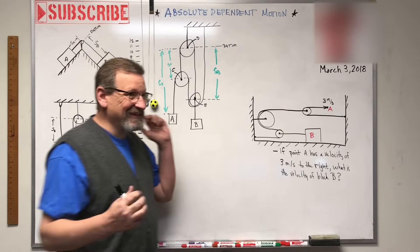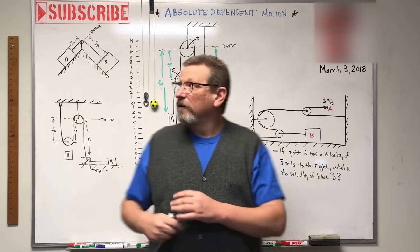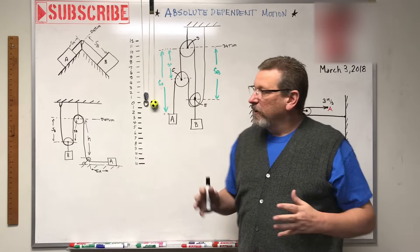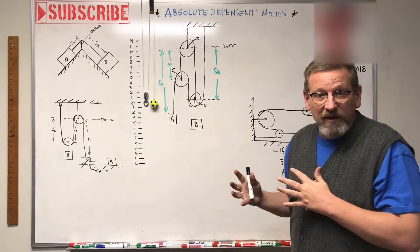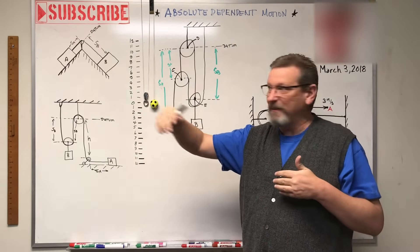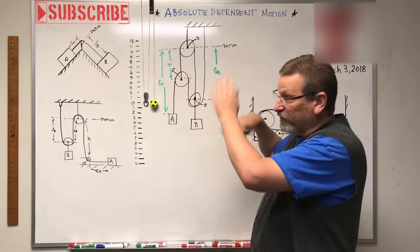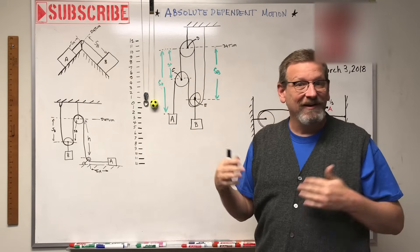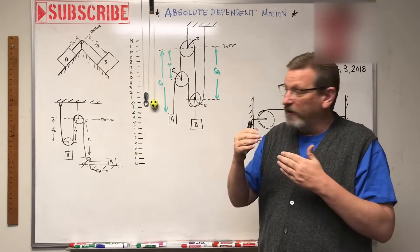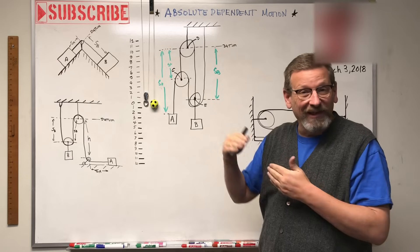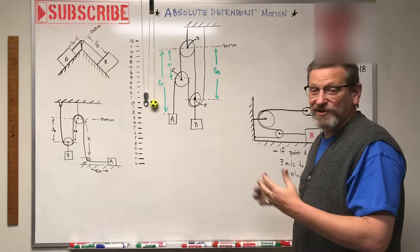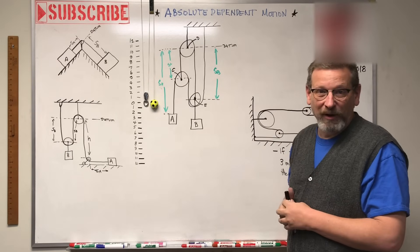Hey, welcome back, gang. Today we're talking about absolute dependent motion. If one thing moves, how does another thing that's connected to it, maybe through a system of pulleys, how does it move? And how is one block related to the other one? I know y'all love yourself some pulley problems, right?